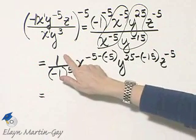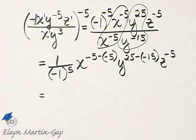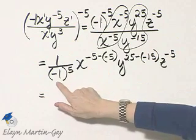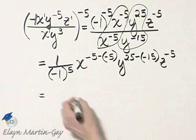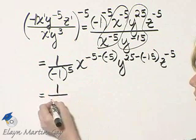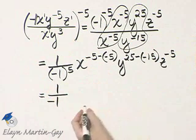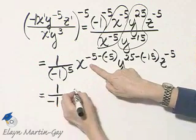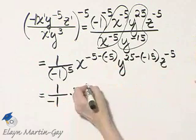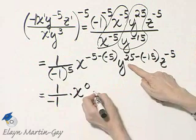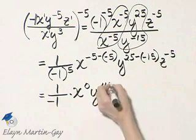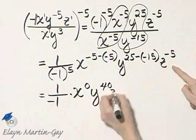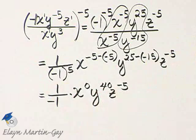Let's see what we have. What is 1 over negative 1, that quantity to the fifth power? Negative 1 times negative 1 times negative 1 times negative 1 times negative 1 — well, that is negative 1. Here I have x raised to the power of negative 5 plus 5, that's 0. And y raised to the power of 25 plus 15, that's 40. And I have my z to the power of negative 5.